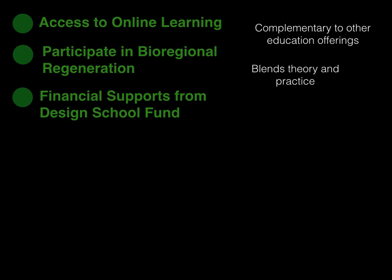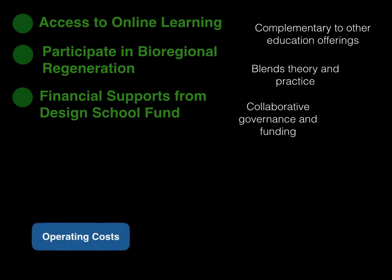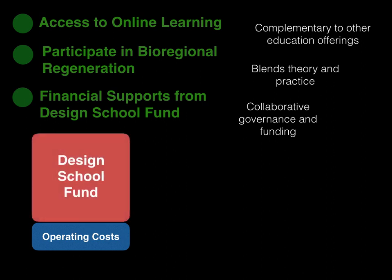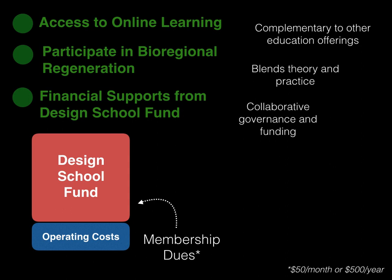This needs to be supported by financial supports and financial flows that we explain in this video as part of the Design School for Regenerating Earth and the Design School Fund, which means that we are practicing and embodying a collaborative model of governance and funding. We have kept our operating costs very low — we only need enough money to support a three-person team. After these operating costs are covered, the remaining money, all of the surplus that comes in, goes into a Design School Fund. All of this is funded by members of the Design School paying membership dues at a rate of $50 per month or $500 per year. The surplus money in the Design School Fund will go to support people and projects associated with the bioregions that we work with and supporting the members of the Design School directly.